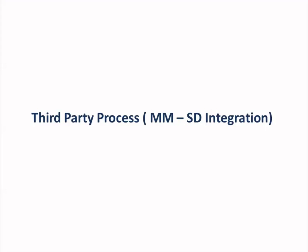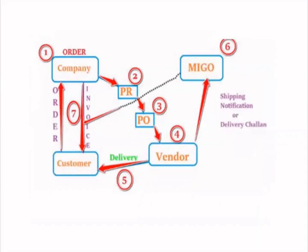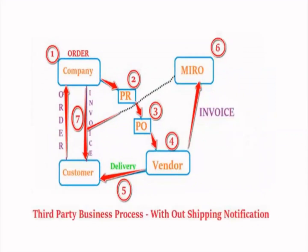In SAP, we have two types of third party business process. One is without shipping notification and the next is with shipping notification. First, let us talk about without shipping notification, and then we will go for with shipping notification.